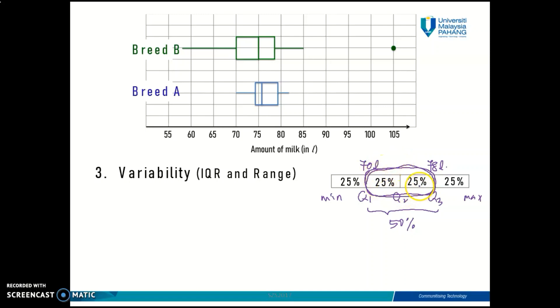By looking at the IQR, you can also understand, you can also interpret that 50% of your data is within quartile one until quartile three. And you can do the same thing for breed A as well. So you can use IQR and range in boxplot to compare between different sets, and you can also use the IQR and range in boxplot to talk about your data distribution.